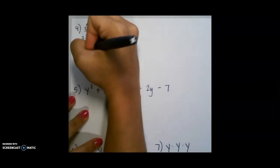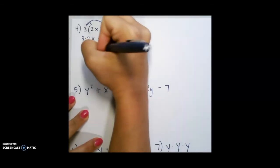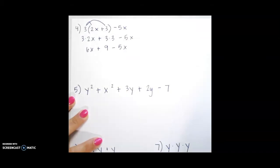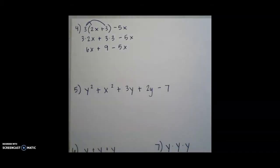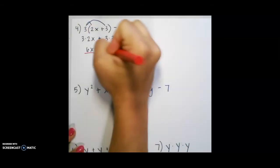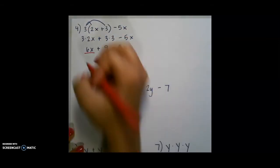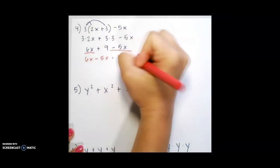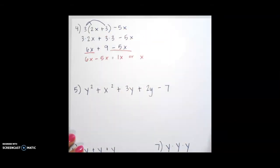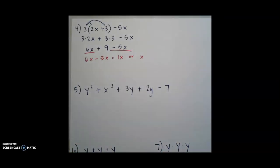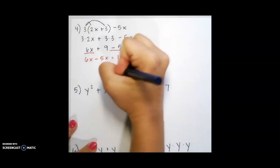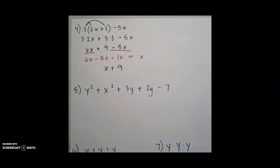3 times 2x is 6x, 3 times 3 is 9, and we cannot forget about the minus 5x at the end. Now I am ready to combine like terms. 6x and minus 5x can be combined. 6x minus 5x is going to give me 1x or x, and since I just have plus 9 left over, I can write x plus 9 for my final answer.